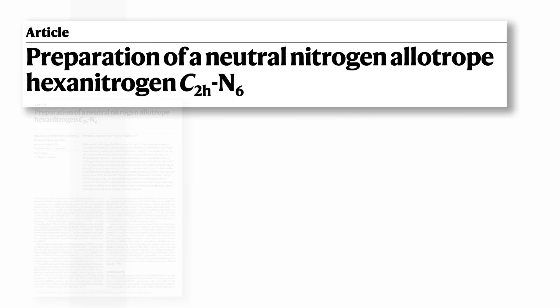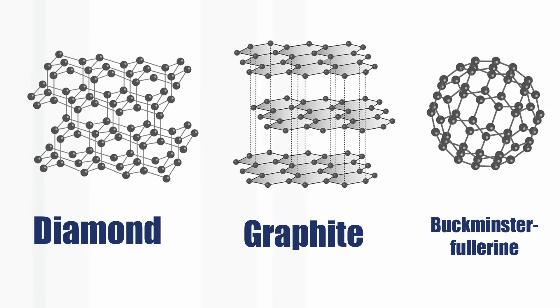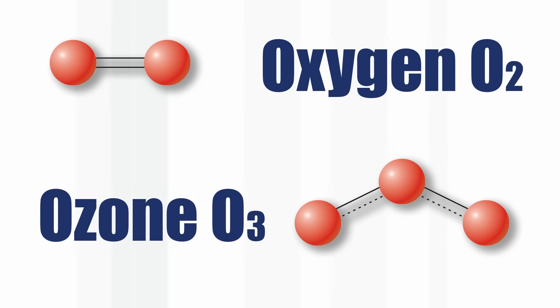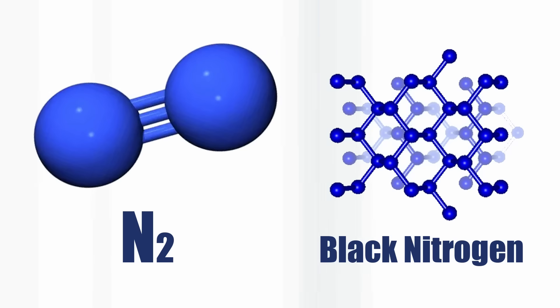In June this year, a paper was published which is really important about nitrogen. People get very excited about so-called allotropes of elements — elements that can exist in different forms. Graphite and diamond for carbon, O2 and ozone for oxygen. Phosphorus can be red, white, or black phosphorus. But nitrogen has just N2 and a form called black nitrogen, which only exists at enormously high pressure. But now this paper describes a new form of nitrogen called N6 — six nitrogen atoms.